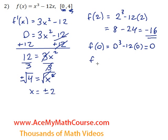What about f of 4? 4 cubed minus 12 times 4. 4 cubed is 64. 12 times 4 is 48. 64 minus 48 is 16.